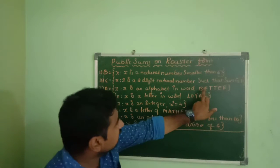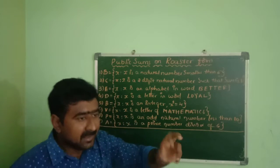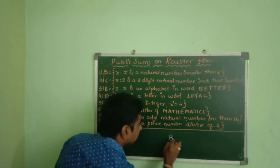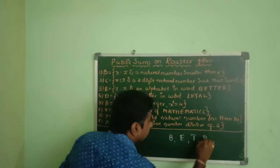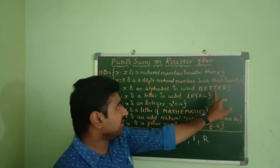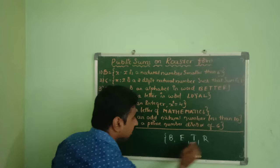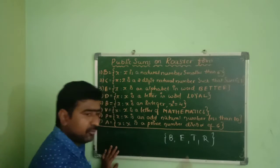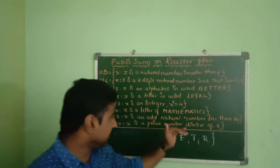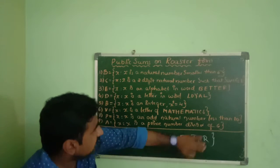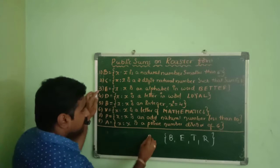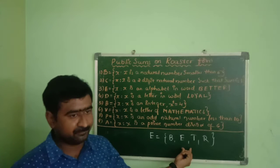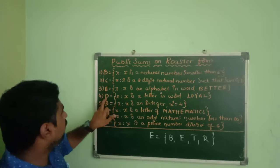Since we do not repeat elements in a set, the repeated T and E are written only once. So Set N = {B, E, T, R}. Each letter — B, E, T, R — is an alphabet element of the set. This is the third sum's roster form.